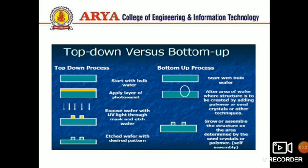In the bottom-up process: start with a bulk buffer; alter the area of the wafer where the structure is to be created by adding polymer, seed crystal, or other techniques; then grow or assemble the structure on the area determined by the seed crystals or polymer — this is called self-assembly.